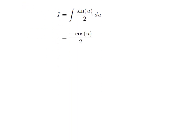This is a simple integration. 1 by 2 is the constant. The antiderivative of sine of u is minus cosine of u. So, I is equal to minus cosine of u divided by 2.